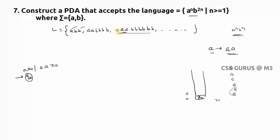When I get a with Z₀ on top, I remove Z₀ and push aaZ₀ — so the stack becomes aaZ₀. Now for the next input a, the top of the stack is a. If you write a, a / aa again, that is also wrong. You are removing one a and pushing two a's, so you'd only have three a's total — but for two input a's you need four a's in the stack.